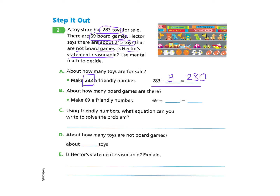Now I'm going to look at Part B: about how many board games are there? Make 69 a friendly number — 69 plus something will make it friendly. If you'd like to pause and try this part on your own, you may. When I look at this number, I know that adding one more makes it 70, which is much easier to add or subtract.